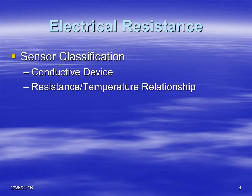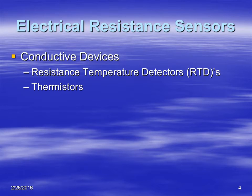Here is how we can classify the sensors. We classify them either based on what they're made of — their conducting device, the type of sensor it is, or its temperature and resistance relationship. There are two different types of conducting devices most commonly used for electric resistance sensors: resistance temperature detectors, also called RTDs, and thermistors. We're going to look at both of these.